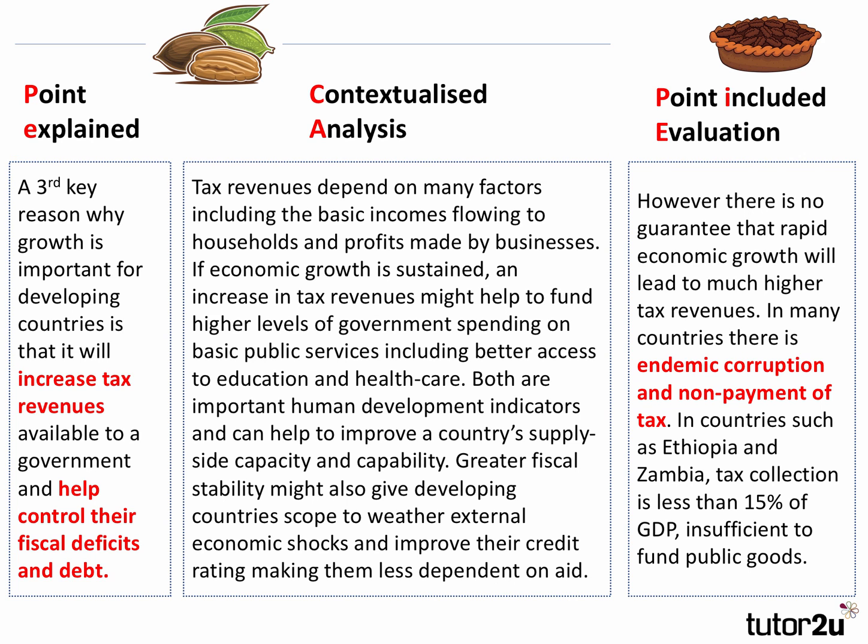Tax collecting authorities in developing countries are perhaps not as efficient as in advanced OECD countries. For example, in countries such as Ethiopia and Zambia, tax collection is less than 15% of national income — probably insufficient to fund nationwide public and merit goods. The key to this structure is that for each of these points there are essentially two paragraphs: a point and analysis is one paragraph; the point including evaluation is the second paragraph.